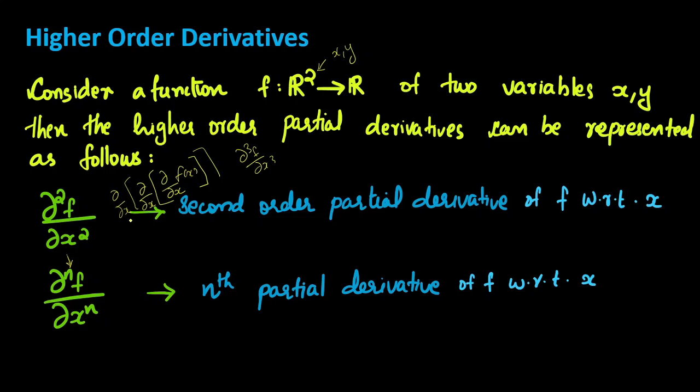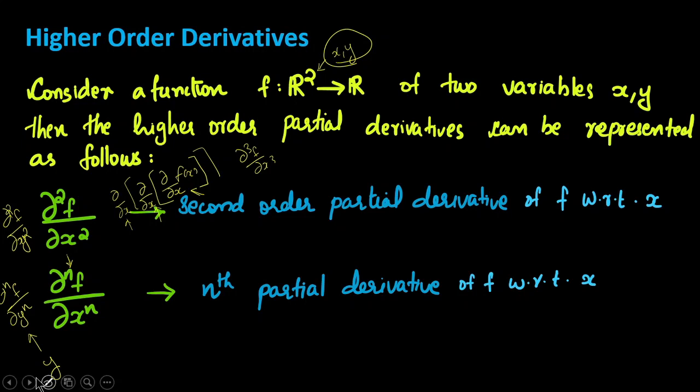In all of the above, we take the derivative with respect to x every time. But since we have two variables x and y, we can also take derivatives with respect to y. In the same way, we can find ∂²f/∂y² and more generally ∂ⁿf/∂yⁿ — the only difference being that the derivation is with respect to y.